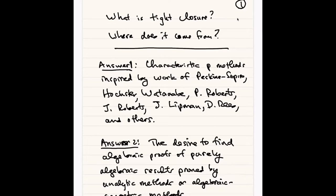I spoke on something involving the integral closure of ideals, which I'll actually talk about in a little bit. And after the talk, Mel Hochster came up to me — we'd been talking about various things over the years — and he said, basically, what's in answer three down there: maybe we should think about the crucial idea in the proof and try to conceptualize.